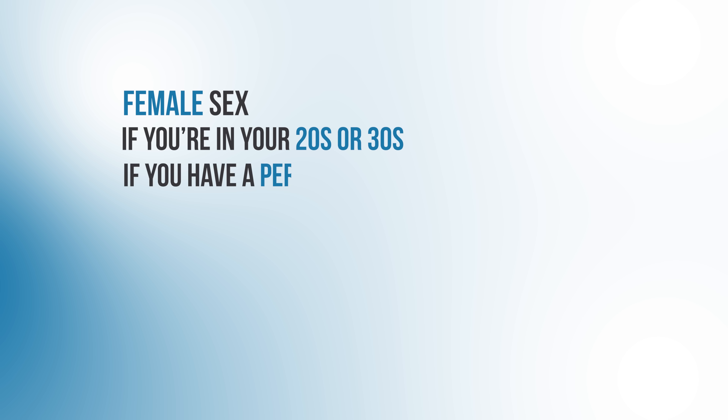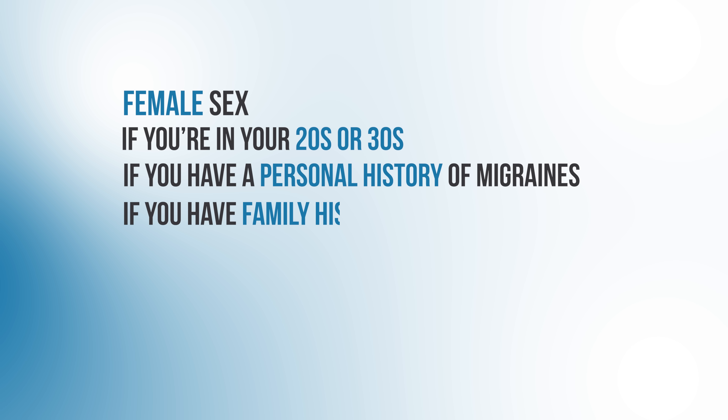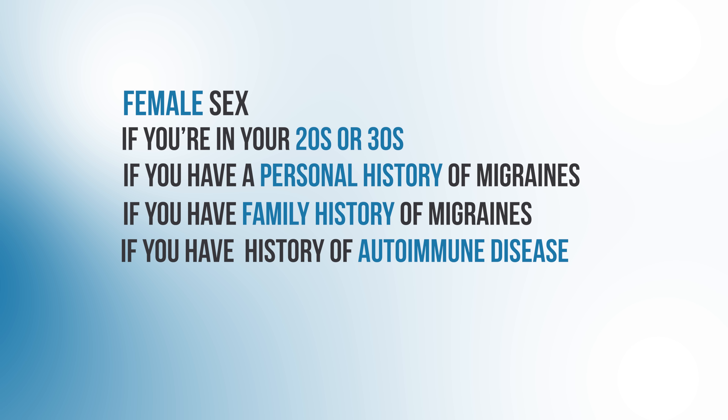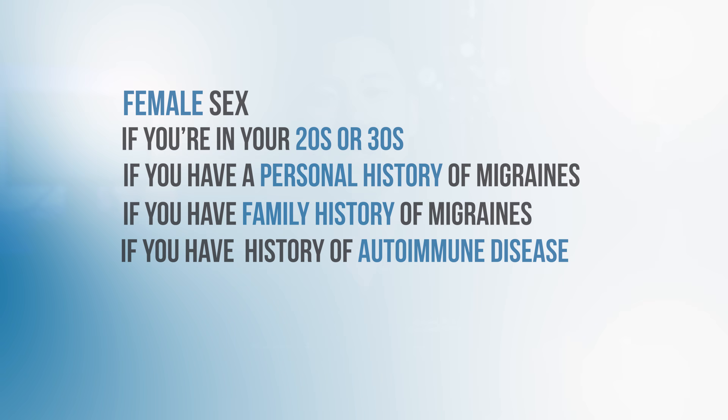Other risk factors that increase your chances of getting ocular migraines include female sex — the theory is that hormonal changes related to the menstrual cycle may increase the likelihood of developing these ocular migraines — being in your 20s or 30s, having a personal or family history of migraines, and having a history of autoimmune disease like lupus.